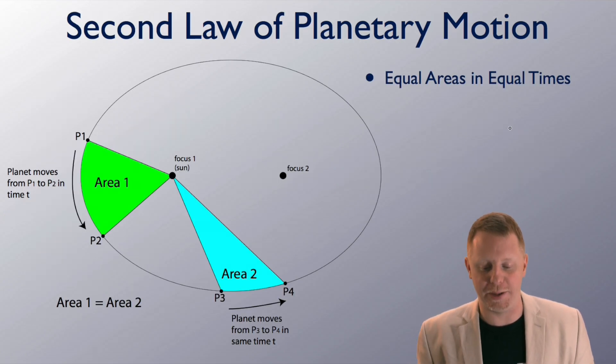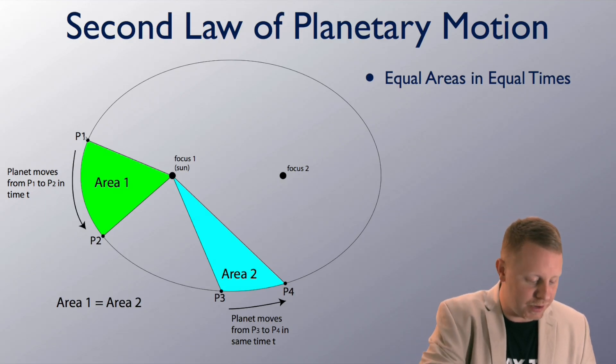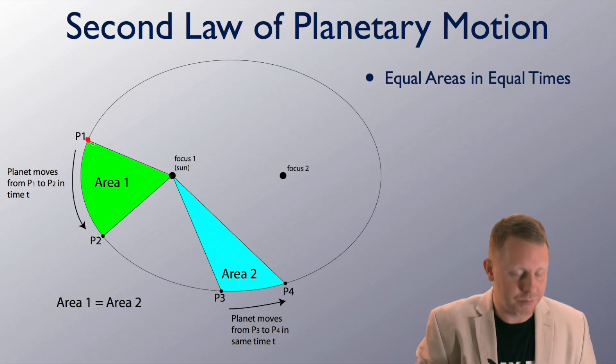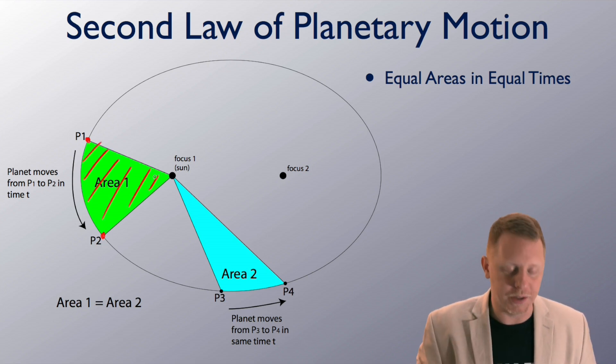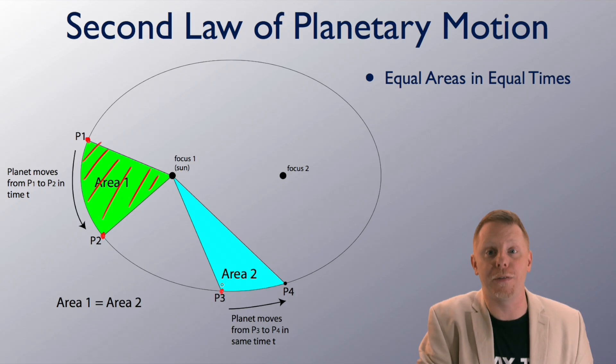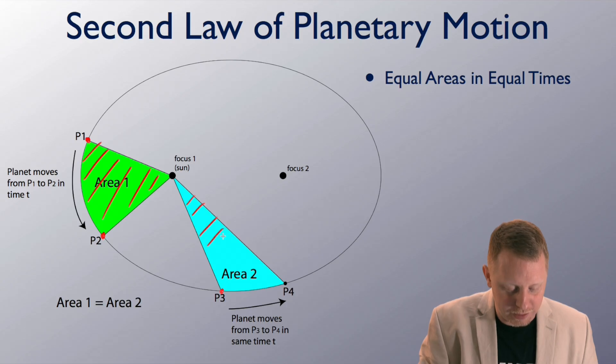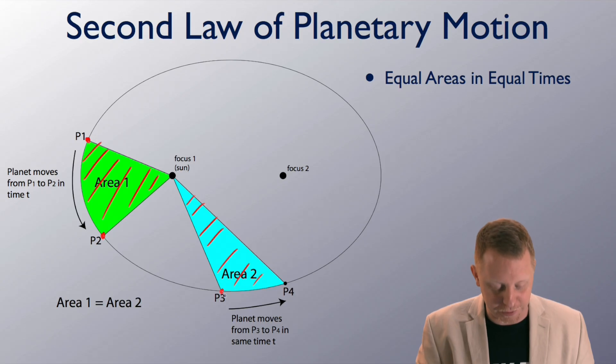Kepler's second law of planetary motion is also called the law of equal areas and equal times. If we have a planet over here at p1, for instance, and in some amount of time it moves over here to p2, we sweep out an area right there, area 1. Now, at a later point in time, it starts at p3, and in the same amount of time it took it to go from p1 to p2, we go from p3 to p4, we're going to sweep out another area. As long as the time intervals from p1 to p2 is the same as the interval from p3 to p4, those areas are going to be equal.